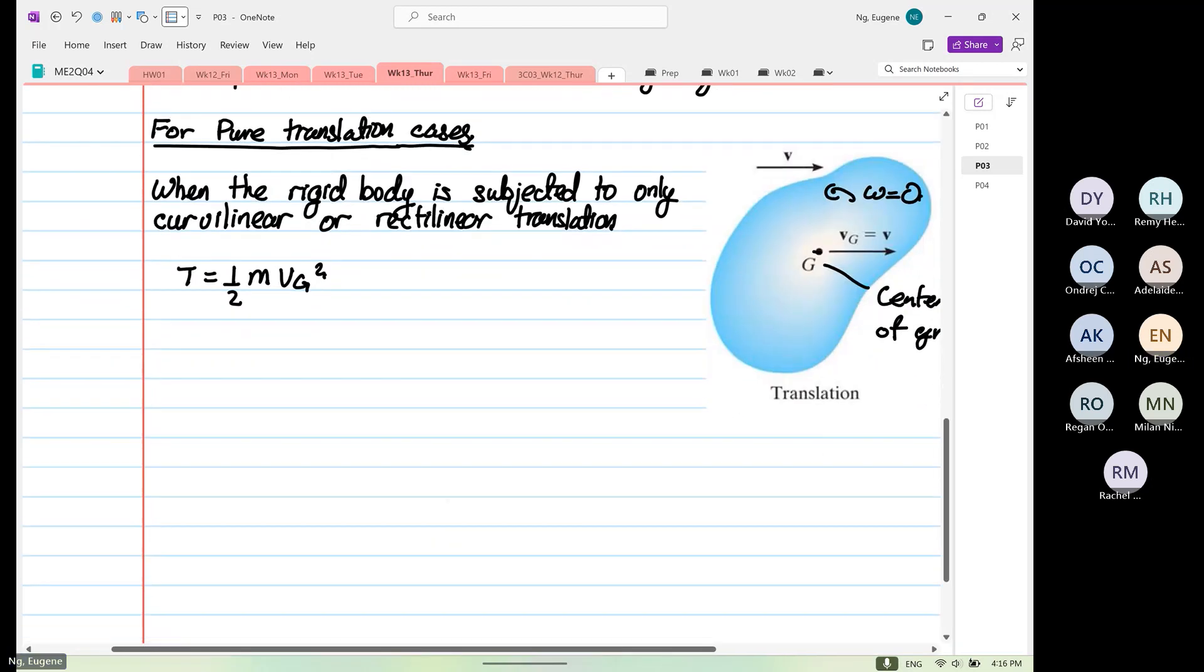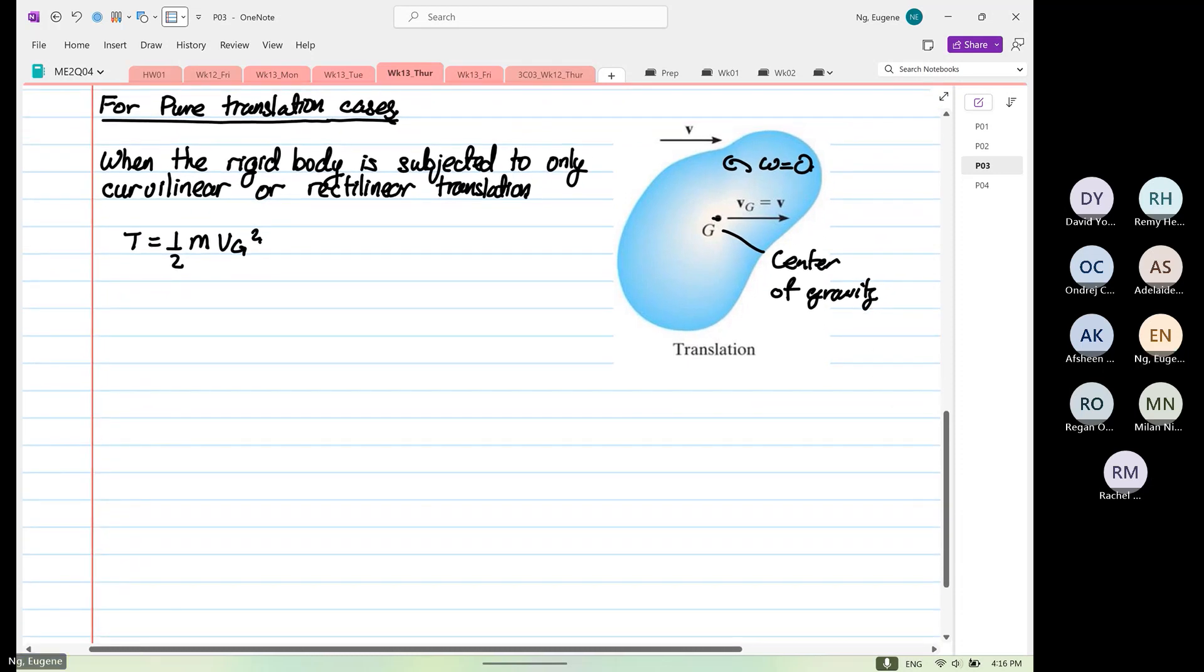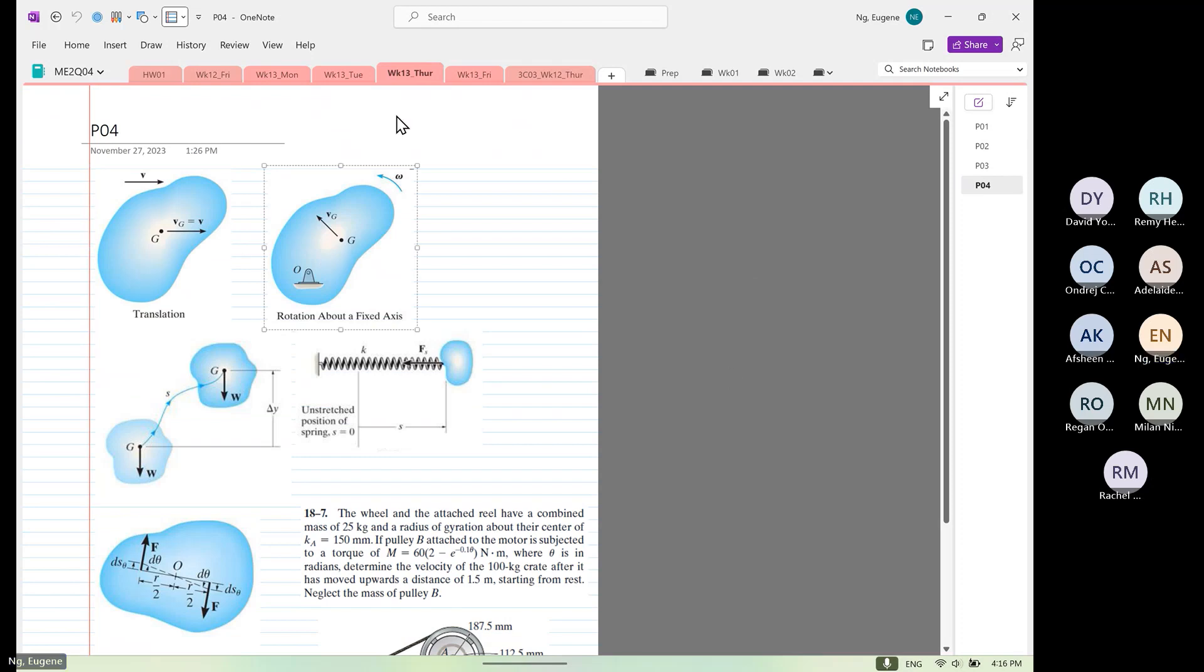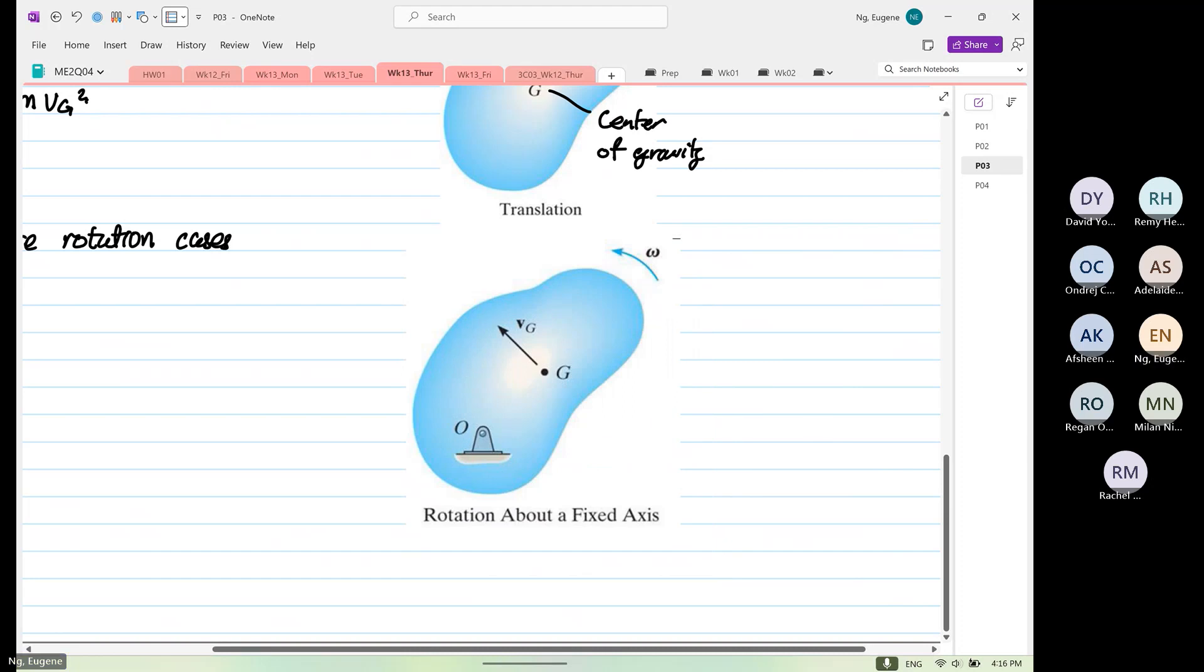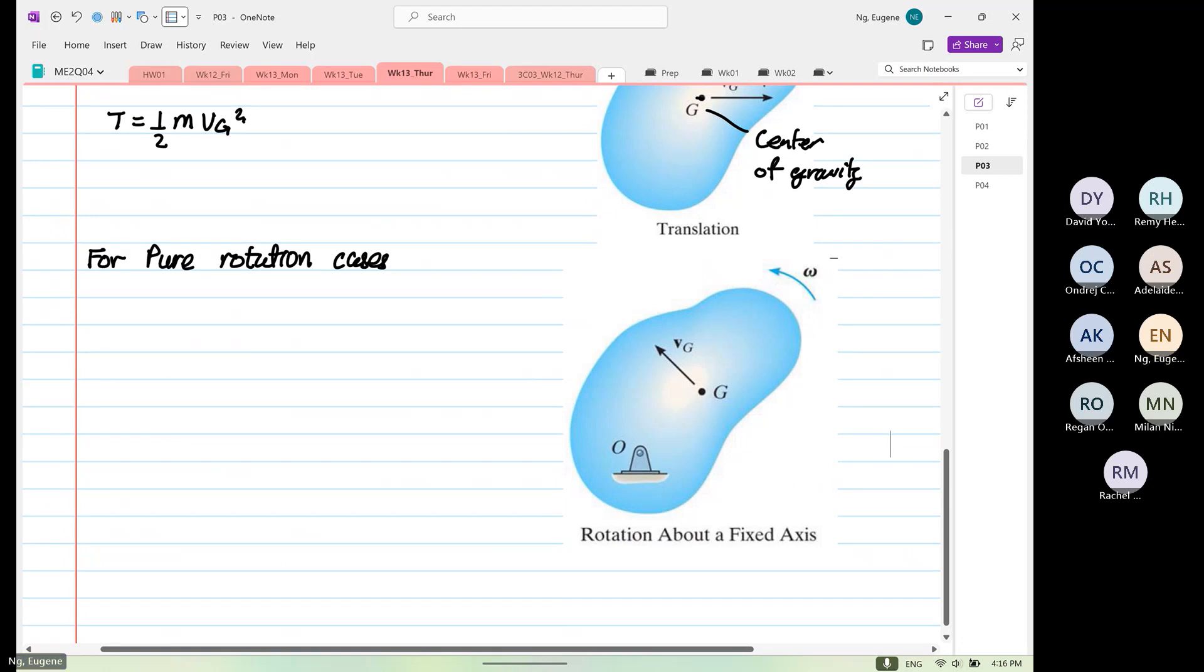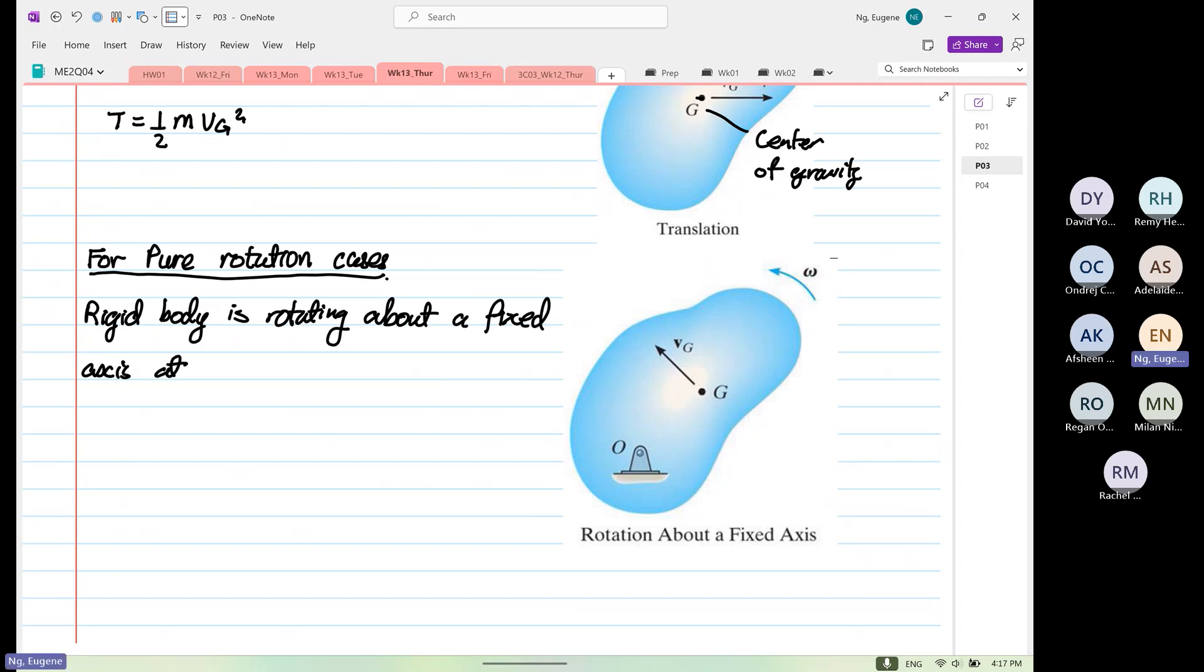So in the second case, for pure rotation cases, when I say pure rotation, we're going to take this diagram over here. When you have pure rotation, for this case, the rigid body is rotating about a fixed axis. For this case, the fixed axis will be at point O.